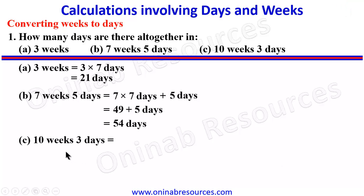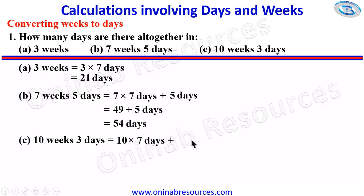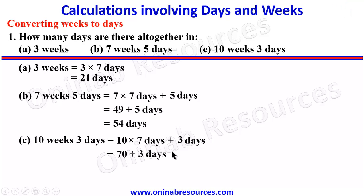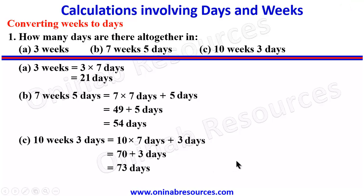We then go to C. For C, we have 10 weeks 3 days. The 10 weeks will also be multiplied by 7 to convert to days. We have 10 times 7 days plus 3 days. 10 times 7 is 70 plus 3 days. 70 days plus 3 days will give us 73 days.